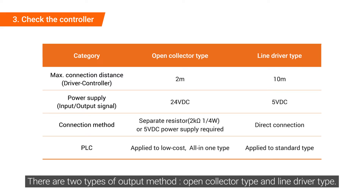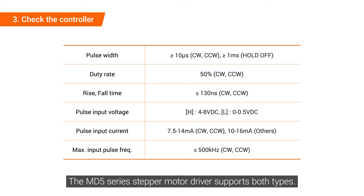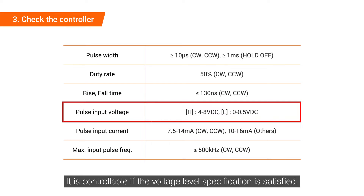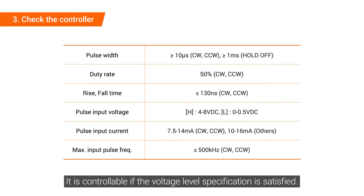There are two types of output method: open collector type and line driver type. The MD5 series stepper motor driver supports both types, and it is controllable if the voltage level specification is satisfied.